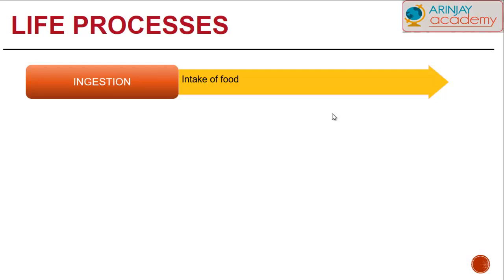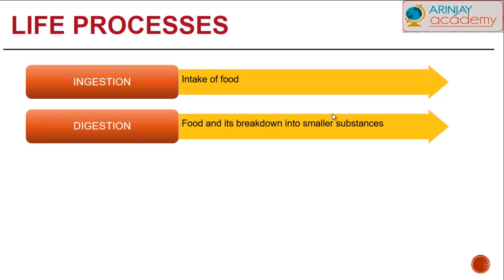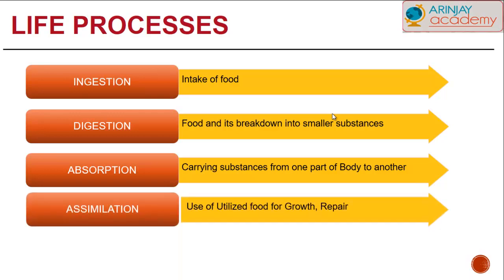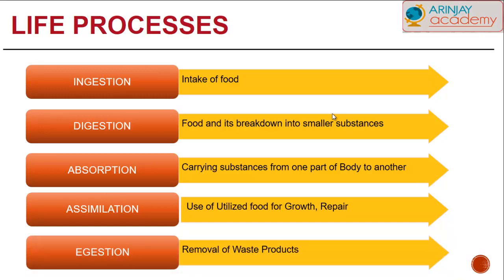Nutrition starts with ingestion, which is the taking in of food — chewing before swallowing. Then digesting food, which is breaking it down into smaller substances. Absorption is where the broken-down food is carried from one part of the body to the next. Assimilation is where the absorbed food is utilized for growth and repair of bones or muscles. Finally, egestion is where unwanted or waste products are removed from the body.